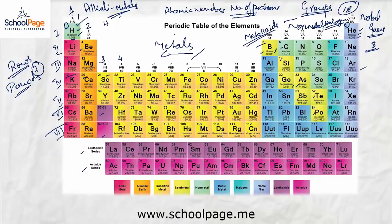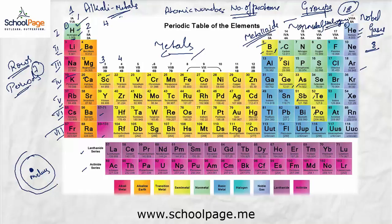So as the number of protons increase, it is obvious that the number of electrons also increase. Consider this as the nucleus of the atom — we know that electrons revolve around the nucleus in fixed orbits. So as the number of protons increase, don't you think the number of orbitals should also increase?